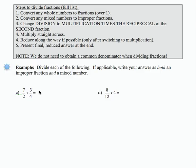In the fraction division example C, I have 7 halves divided by 3 fourths. I'm going to use the rules above, which tell me to leave the first fraction as is, change division to multiplication, and use the reciprocal of the second fraction.